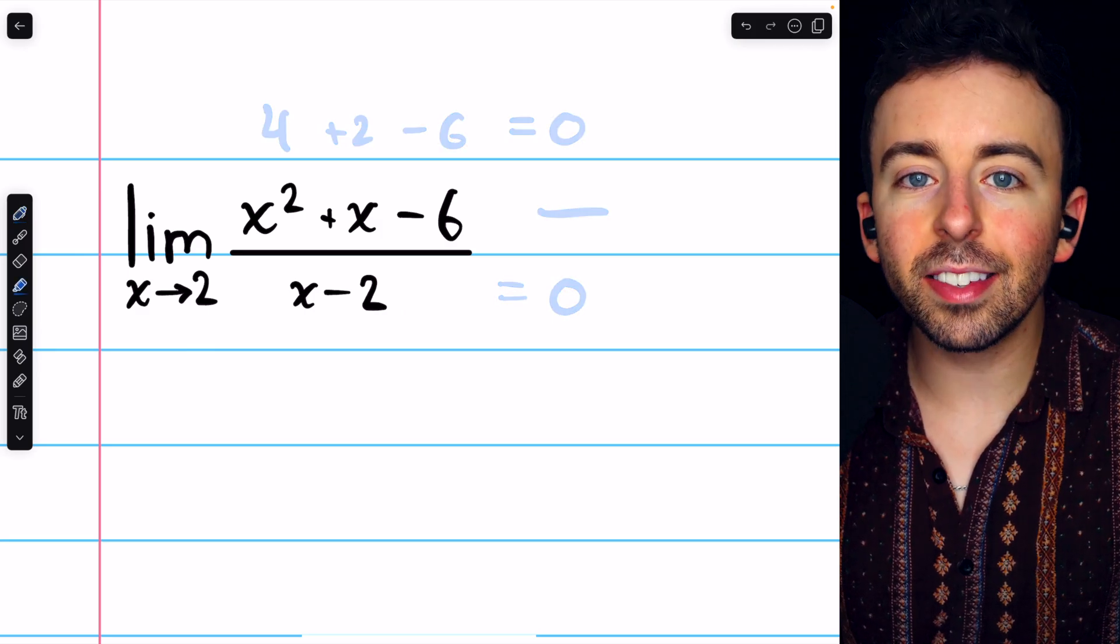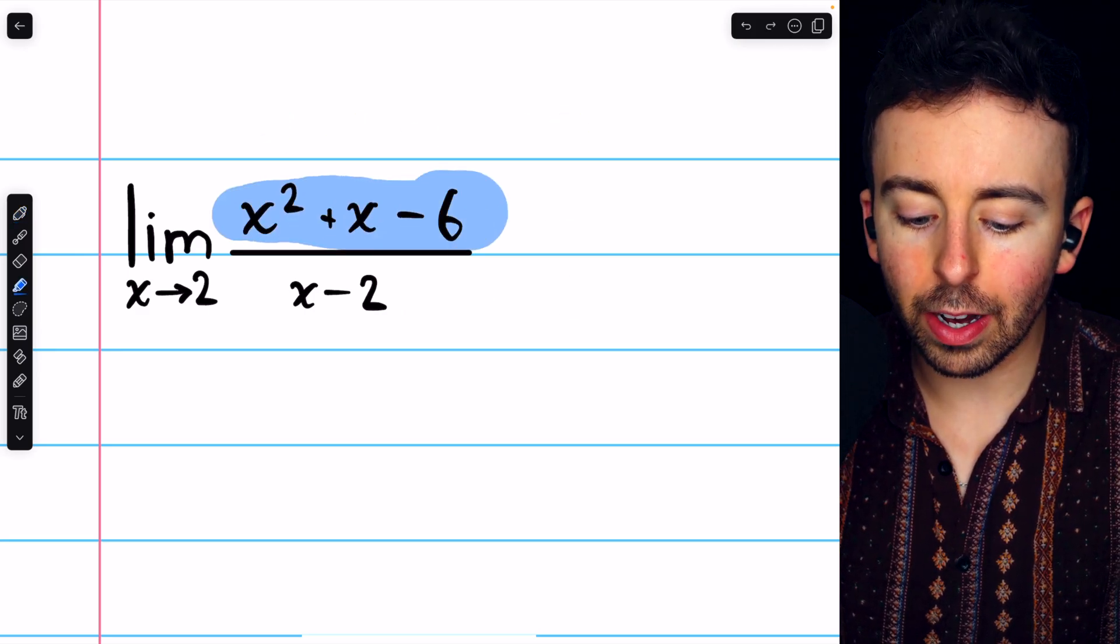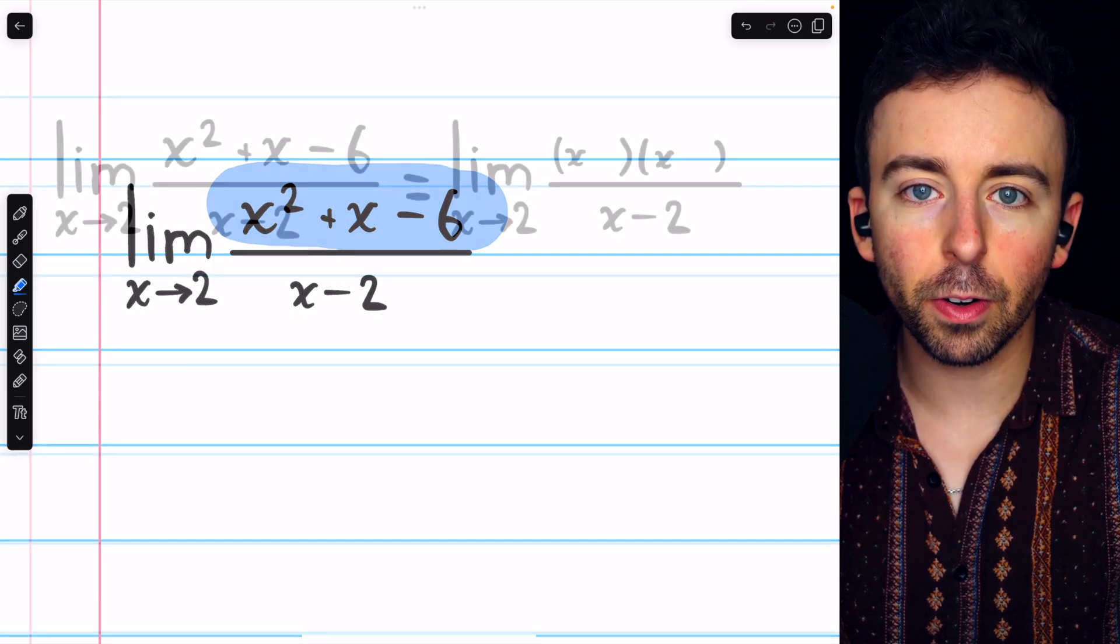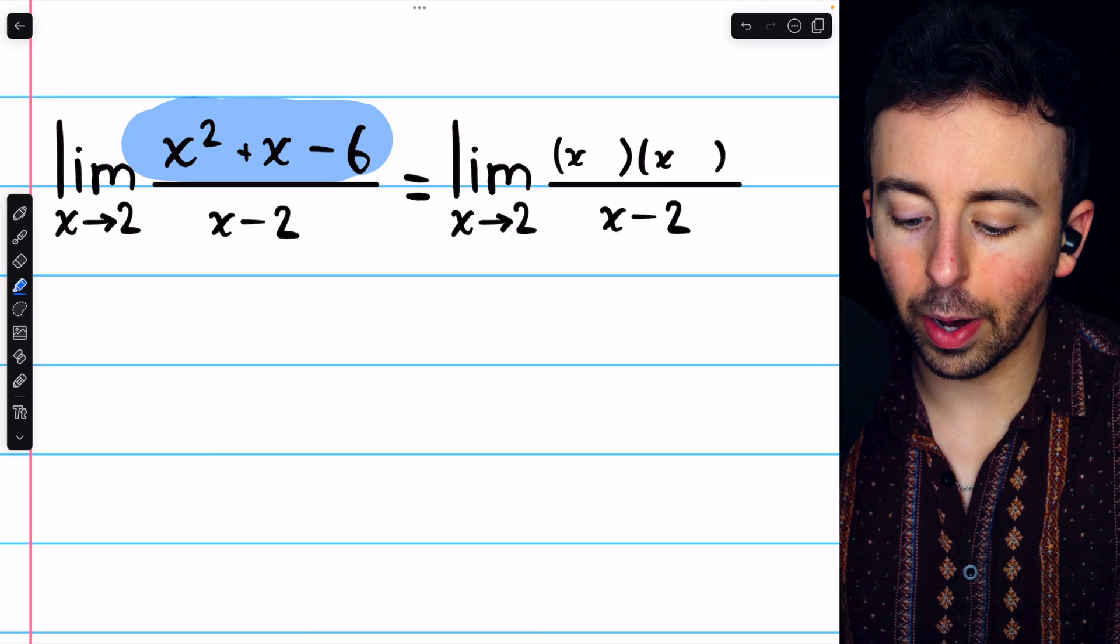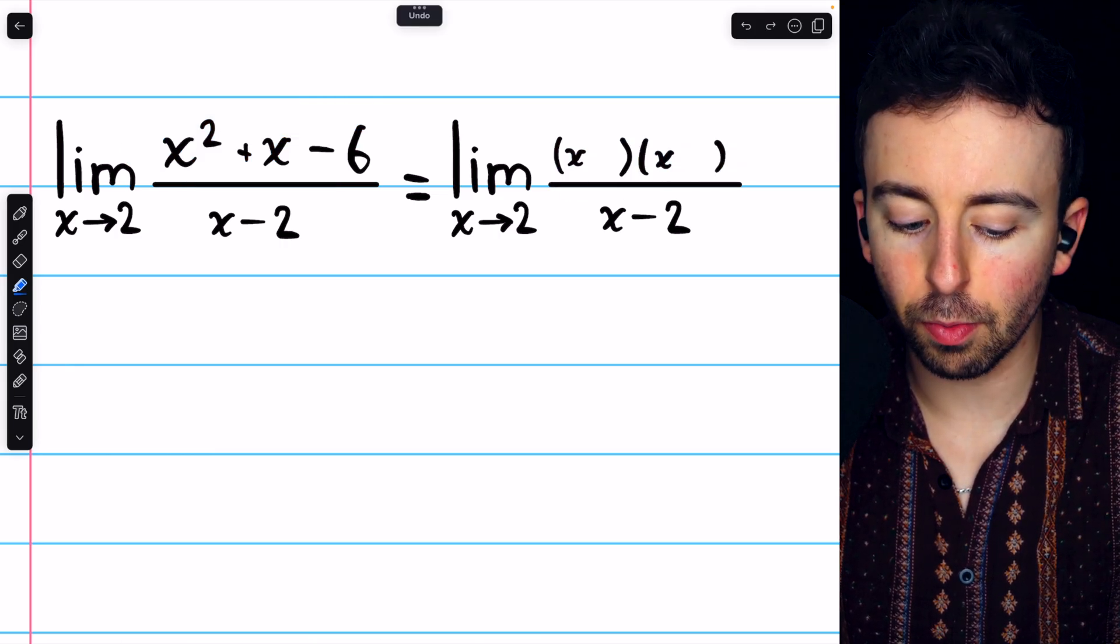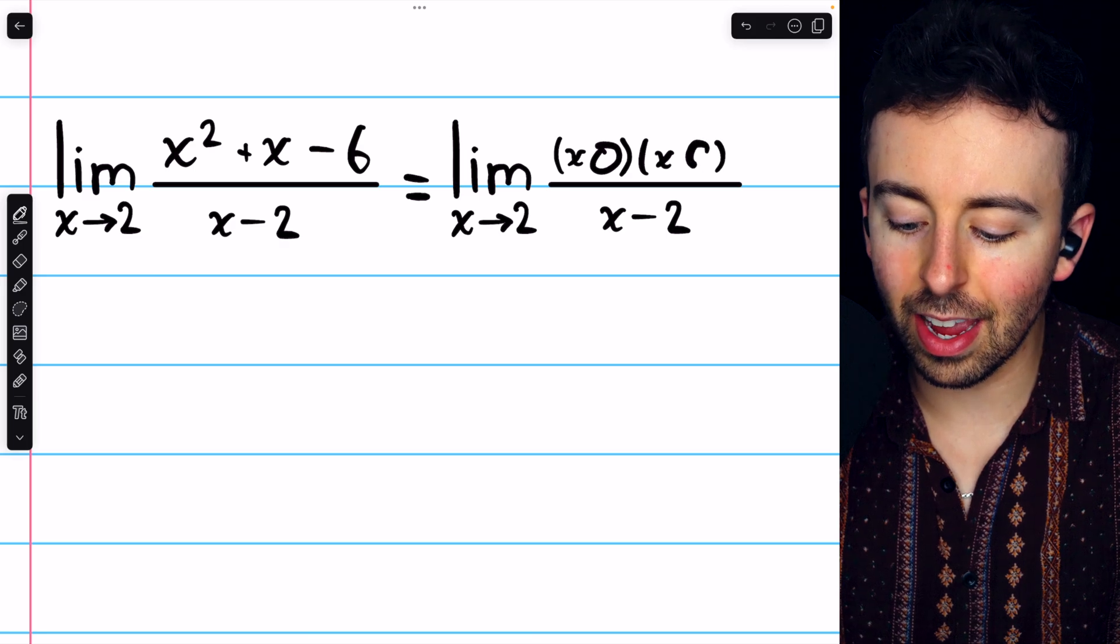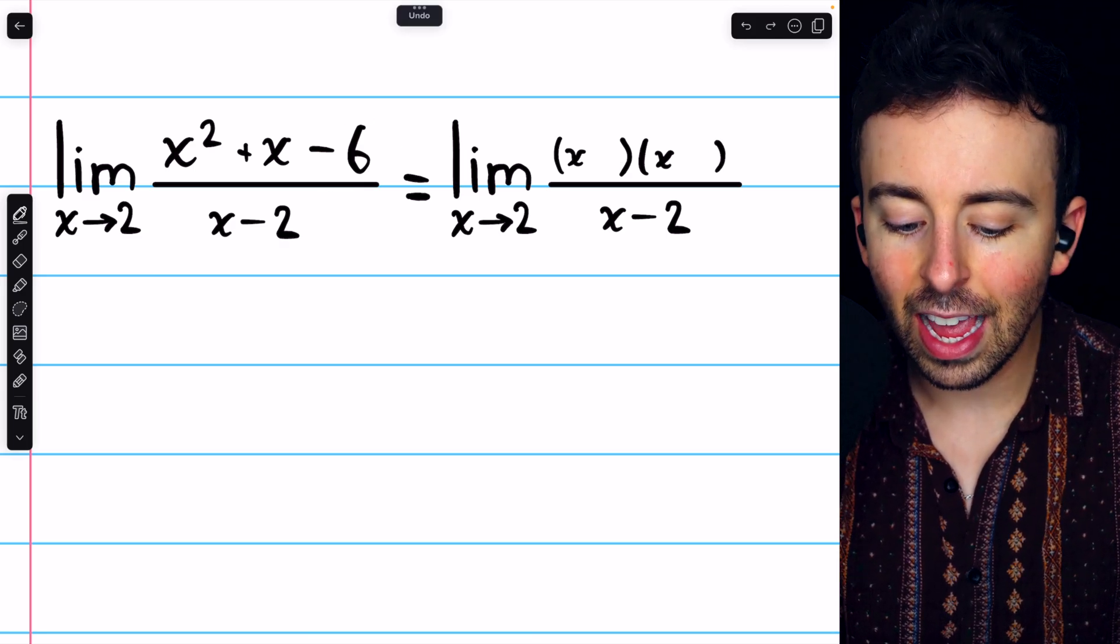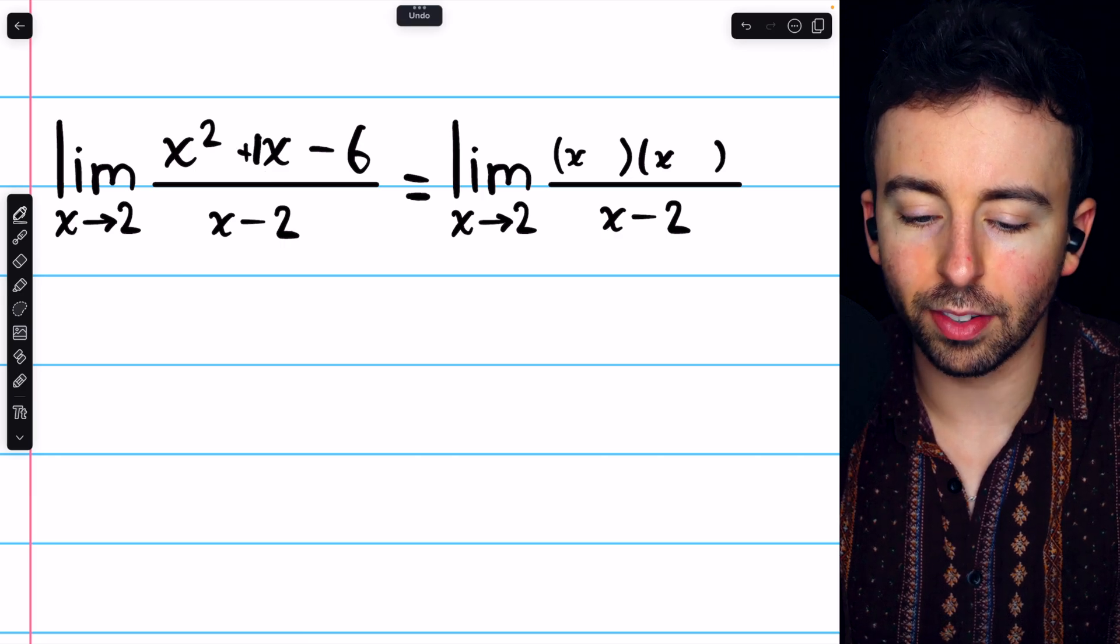That's not going to work. Instead, we notice that the numerator is a quadratic, and so it might be easy to factor. So we're trying to write the numerator as x plus or minus something times x plus or minus something. Those things need to be two numbers that multiply to negative 6 and add to positive 1.